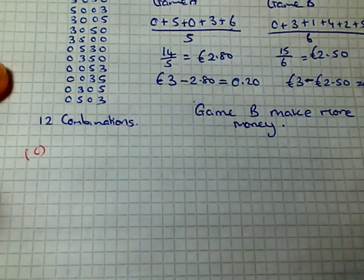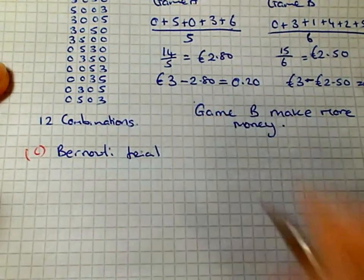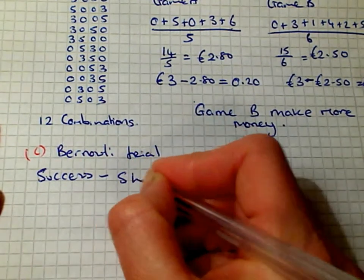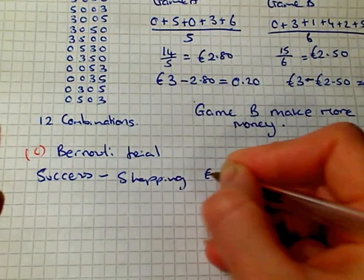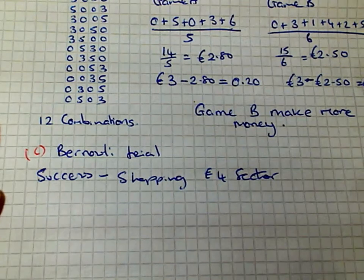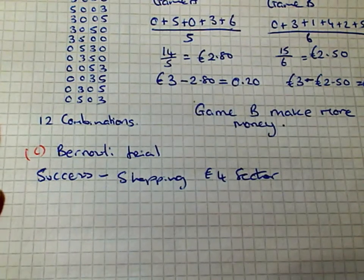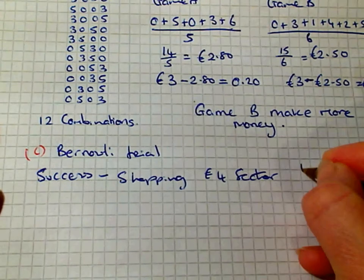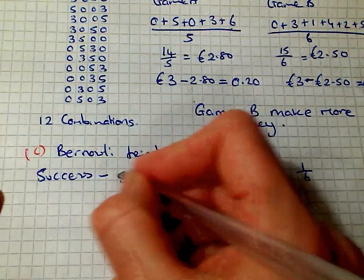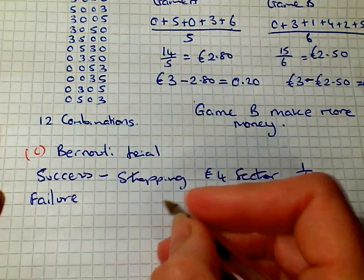This is a Bernoulli trial. The success is stopping in the 4 euro sector. By looking at the diagram of game B, 4 euros occurs once and there's a total of 6 segments, so the probability of success is 1/6 for it stopping in the 4 euro segment.